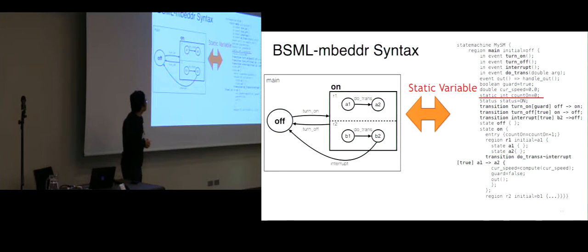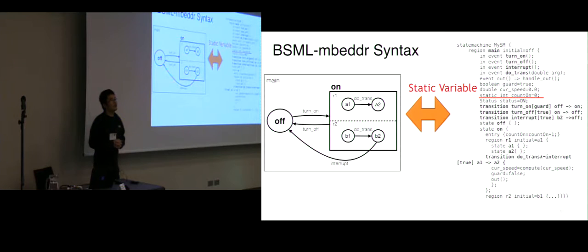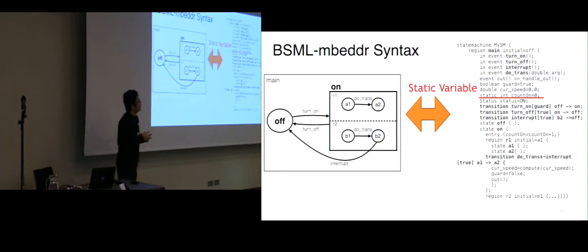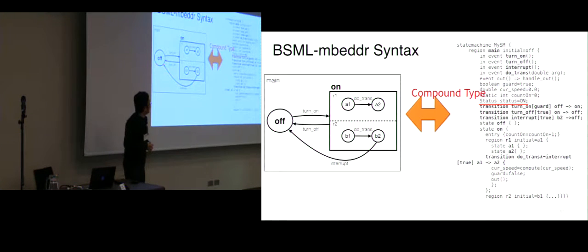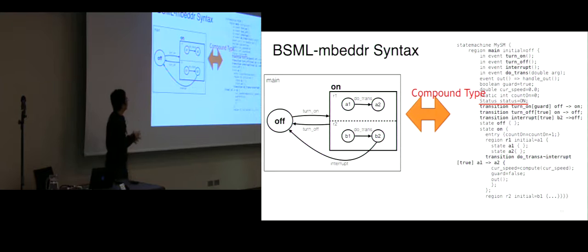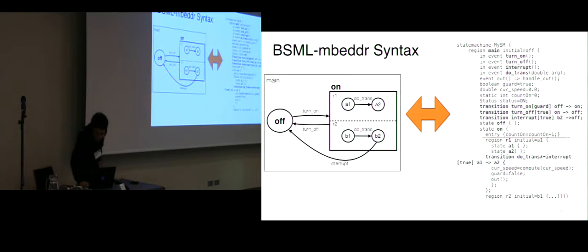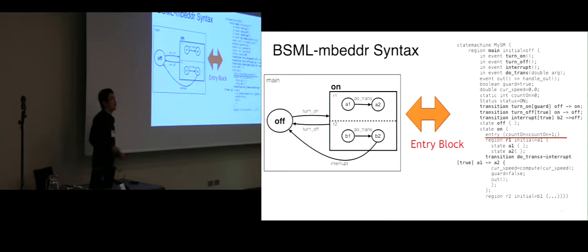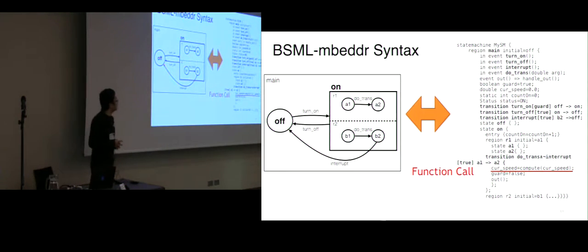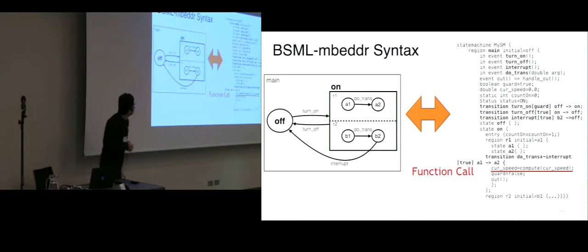State machine variables can be tagged as static, meaning they are not going to be re-initialized when the defining region is re-entered — they keep their value. Just like event argument types, state machine variable types are also normal C types; they can be simple C types or compound types defined by the users. Under a state or region, we can optionally define an entry block so that it is executed whenever the region or state is entered. We can perform function calls in an action or guard condition of a transition, or in an entry block. If we do a function call in a guard condition, its return value must be a Boolean.